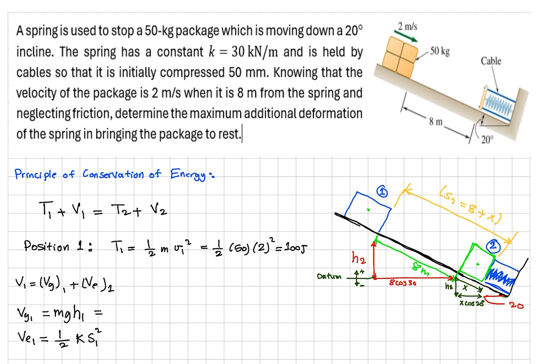Knowing that the velocity of this package is 2 meters per second at this point when the distance is 8 meters from the spring, and neglecting the friction between the surface, determine the maximum additional deformation of the spring to bring the package to rest.